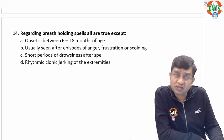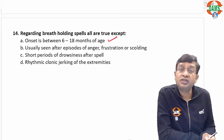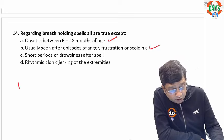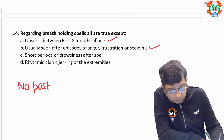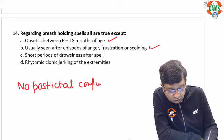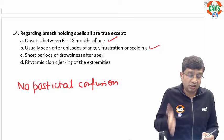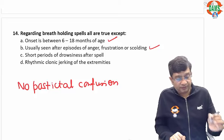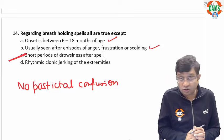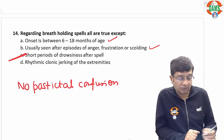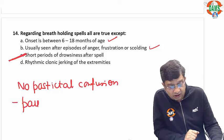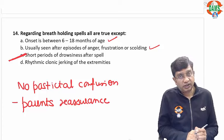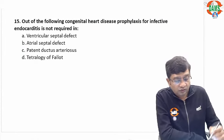Question fourteen: regarding breath holding spells, all are true except which? Breath holding spells mimic absence seizures (absence seizure age group is 5–8 years), but breath holding spells start between 6 to 18 months. They occur after anger, frustration, or scolding. Importantly, there is no post-ictal confusion — similar to absence seizures. Short periods of drowsiness after spell is not true. Rhythmic clonic jerking can be present. The only treatment required is parental reassurance.